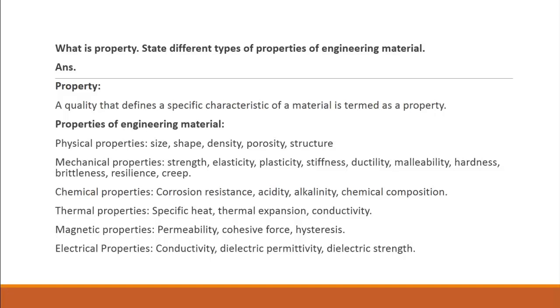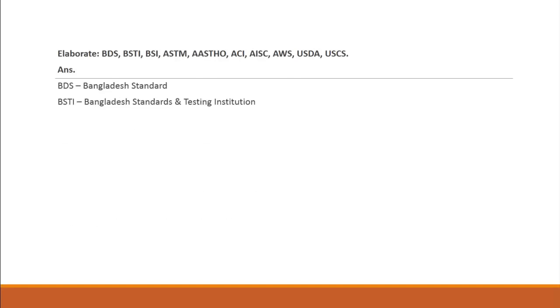Now sometimes a short form of some word has to be elaborated. First one is BDS, Bangladesh Standard. Then BSTI, Bangladesh Standards and Testing Institution. BSI, British Standards Institute. Then ASTM, American Society of Testing Materials.